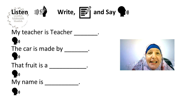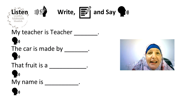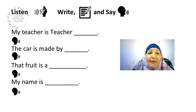My teacher is Teacher K. My teacher is Teacher K. Now pause the video, write in the word, and say the sentence out loud. The car is made by Tesla. The car is made by Tesla. That fruit is a banana. That fruit is a banana. My name is — fill in your own name. My name is — write your name.